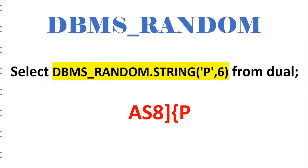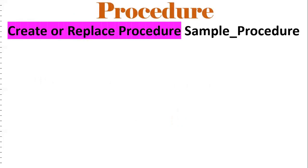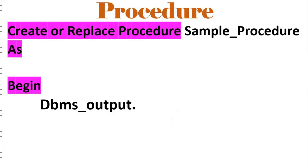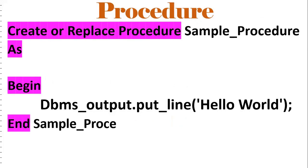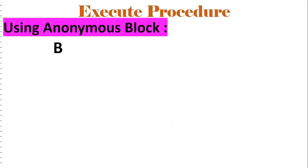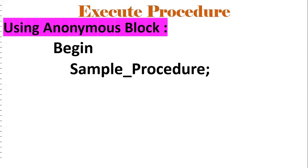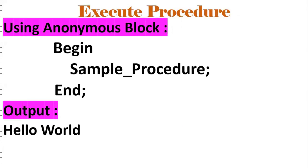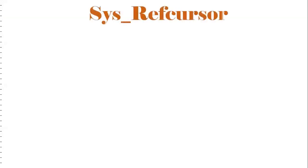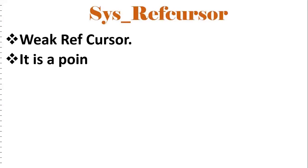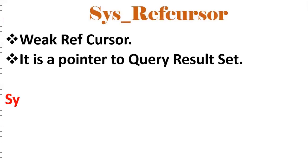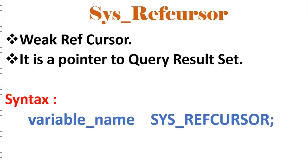I have created one video on OTP generation using the DBMS_RANDOM package. Regarding what a procedure is — this is the syntax: CREATE OR REPLACE PROCEDURE procedure_name AS BEGIN DBMS_OUTPUT.PUT_LINE('Hello World'); END. This is a sample procedure. If you want to execute it using an anonymous block: BEGIN procedure_name; END — the output will be 'Hello World'. Next, we have the system cursor, which is a weak ref cursor — a pointer to a query result. The syntax is: variable_name SYS_REFCURSOR.